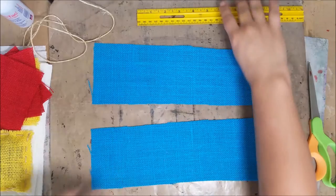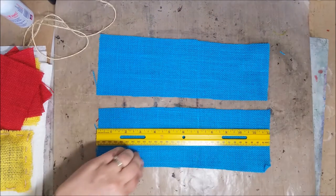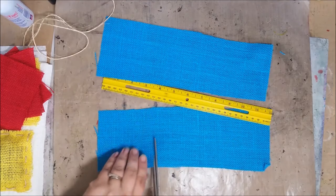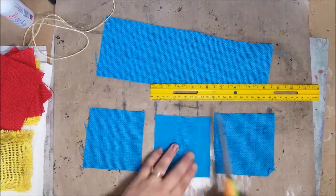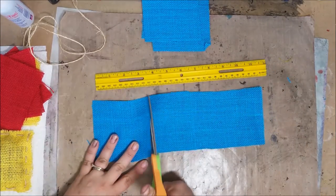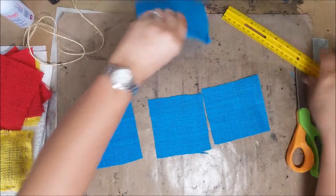Now we need to cut these into four inch sections. Same thing, I'm going to take my ruler along the 12 inch side and just cut them into four inch squares. And there we go.